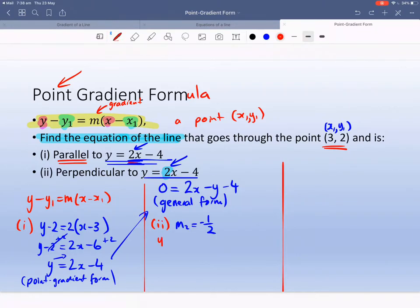We just substitute it into our formula again. Y minus Y1 equals MX minus X1. It still goes through that point. The only thing different is the gradient. Y minus 2 equals minus 1 half, X minus 3. It's going to minus X on 2, plus 3 on 2.